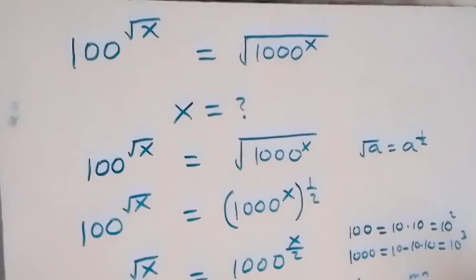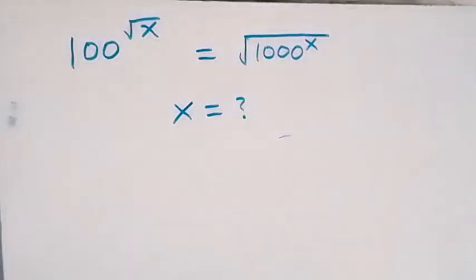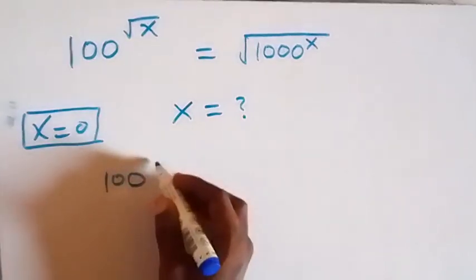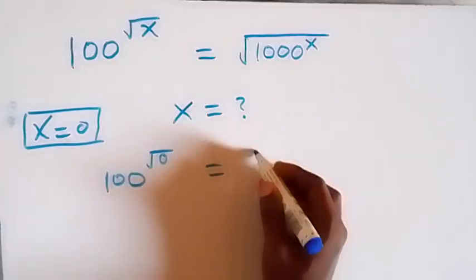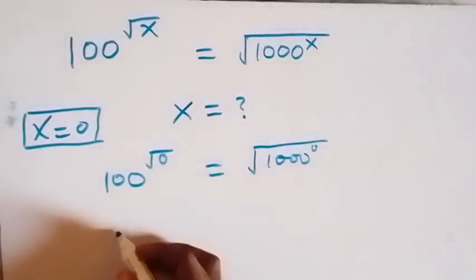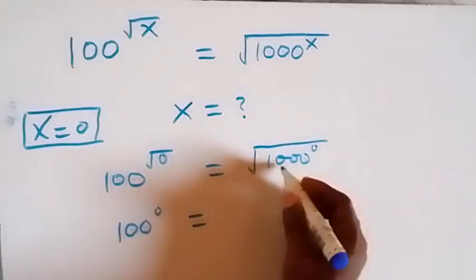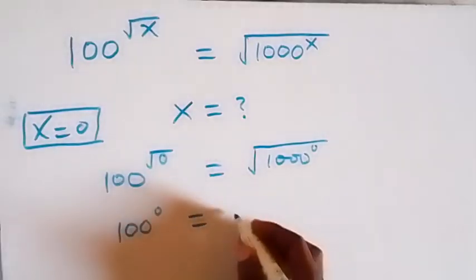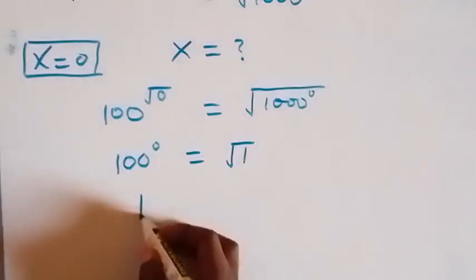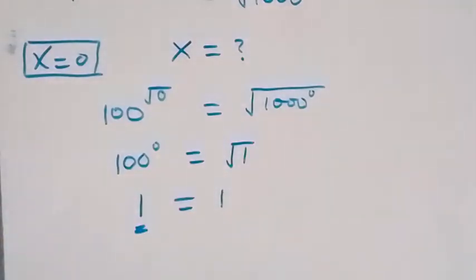Now let's check if these values satisfy the given problem. First, when x equals 0: substituting, this becomes 100 raised to power root 0 equals root of 1000 raised to power 0. Root 0 is 0, so we have 100 raised to power 0 equals 1000 raised to power 0. Any number raised to power 0 is 1, so both sides equal 1. We confirm that x equals 0 satisfies the given problem.